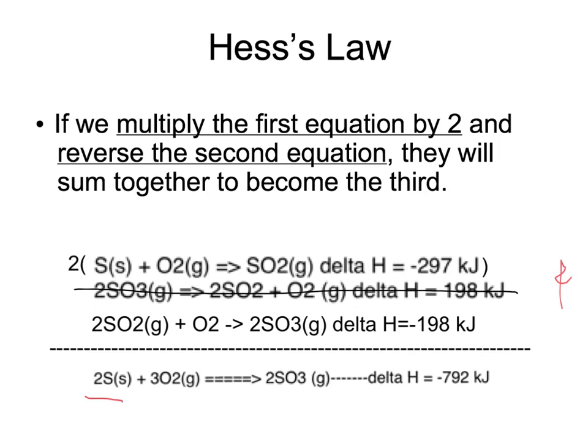The second thing I noticed is that if I flip the second equation around, I would end up with two SO3s as a product, which is what I want as a product. So I'm going to go ahead and do that. But when I flip this equation around, I have to change the sign of the delta H because now it's going from an endothermic process to an exothermic process. So I make it negative 198 kilojoules.